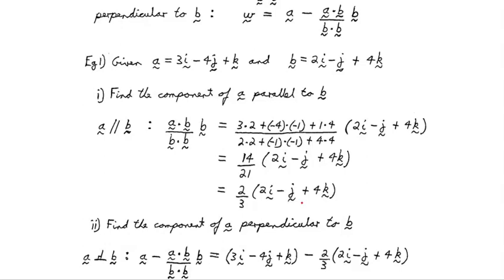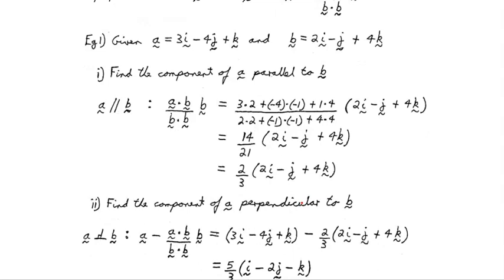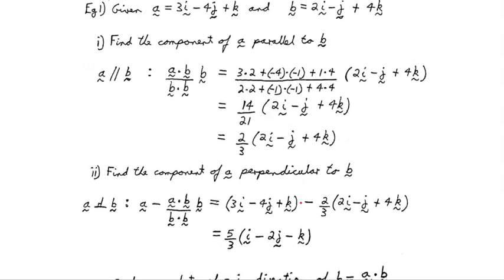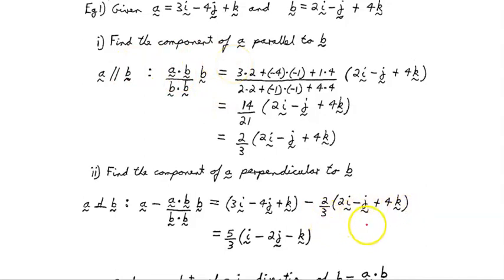Now let's find the component of A perpendicular to B. That's simply A minus the part parallel to B: take vector A and subtract the result we found — minus 2/3 times that vector. Working through that gives us 5/3 times this object here. That's the perpendicular component W.